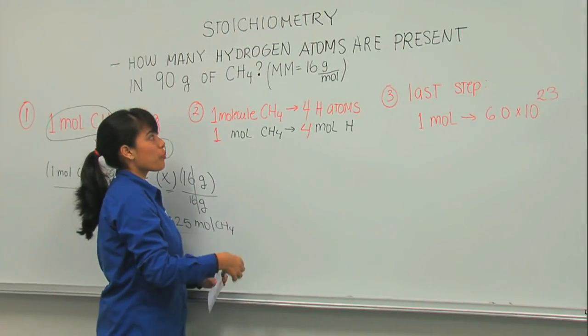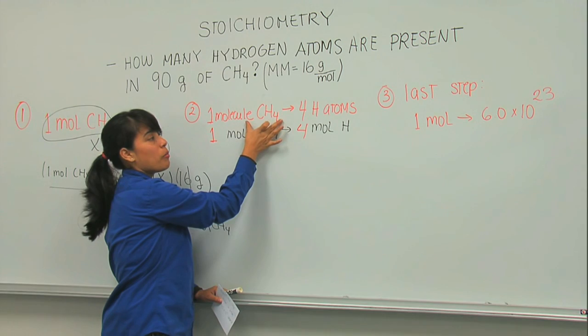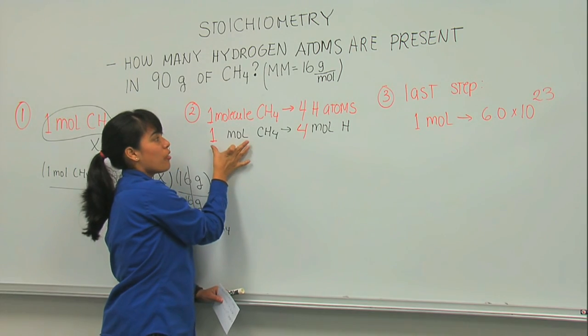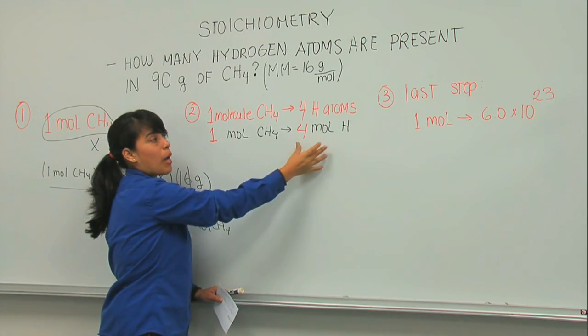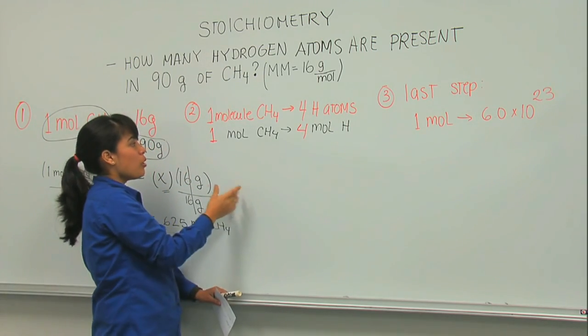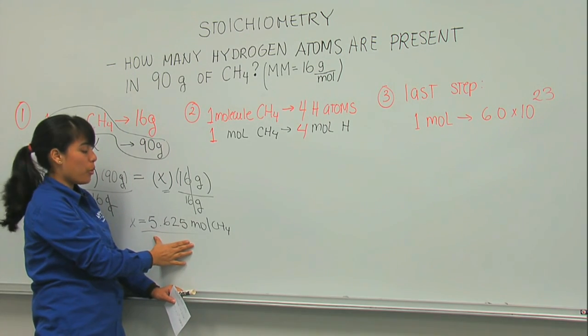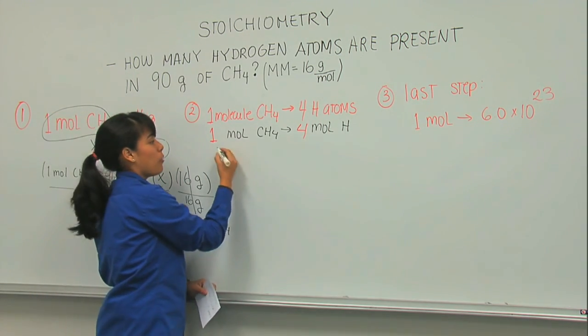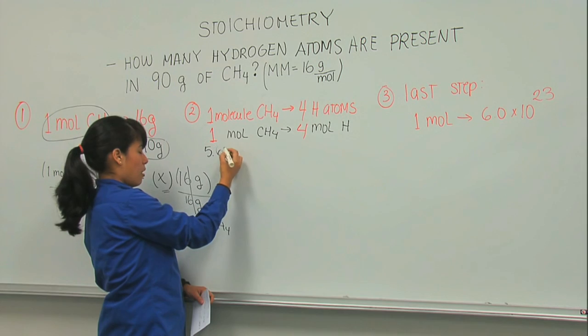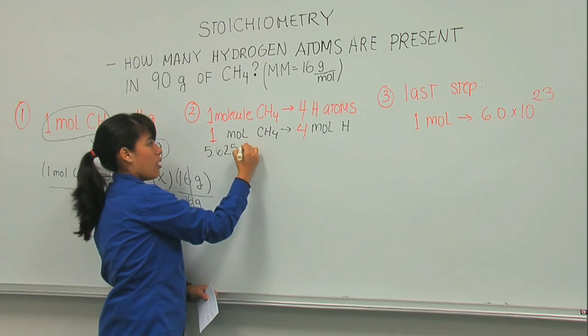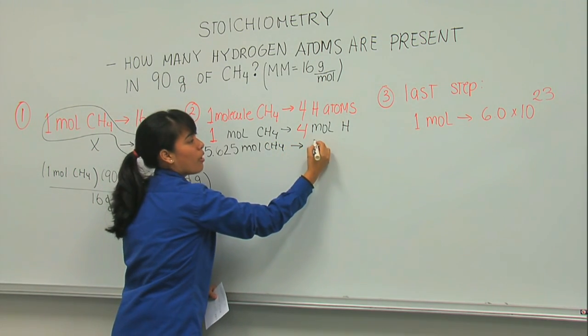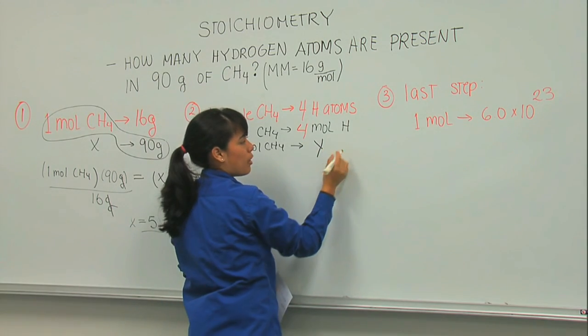So, what do I know? I know that in one molecule of CH4, I have four atoms of hydrogen. So by extension, if I have one mole of CH4, I'm going to have four moles of hydrogen. This is what I know. And I know that in my problem, they have given me 5.625 moles of CH4. Because that was my previous calculation. And I put it here. 5.625 moles of CH4 is going to be a certain number of moles of hydrogen, which is Y.